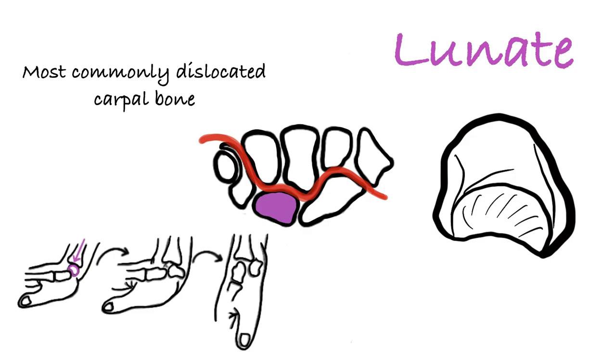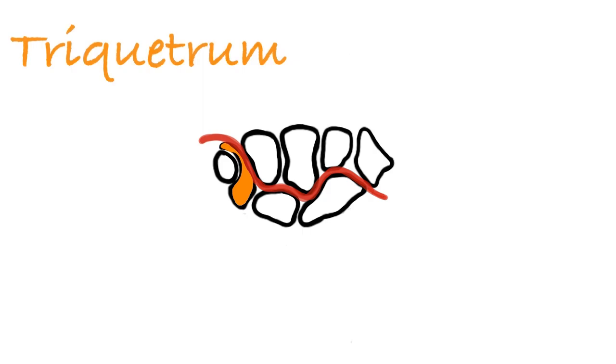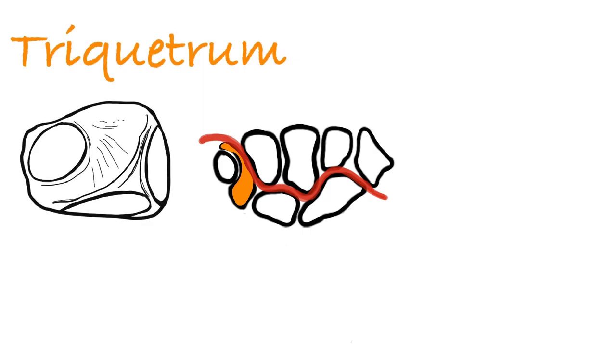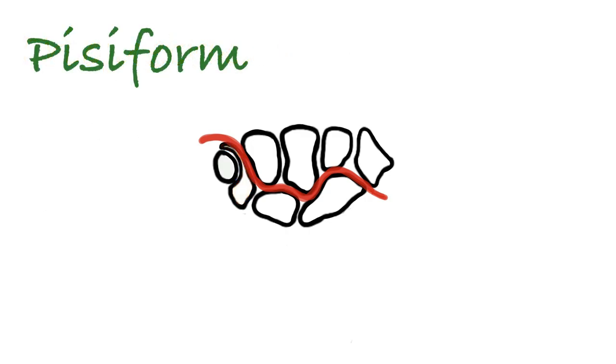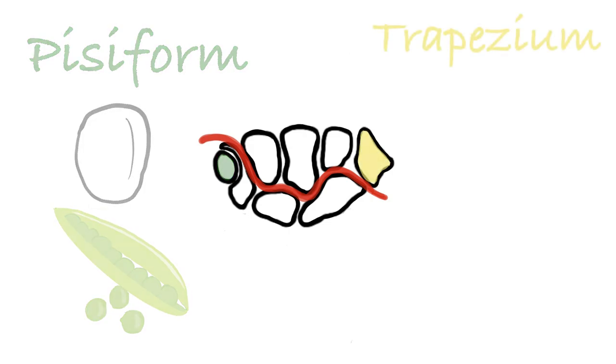Triquetrum is derived from triquetrus in Latin. Tri means three, quetro means corner, so this bone is three-corner shape. It is actually in pyramidal shape and named as triquetrum. Pisiform is pea-shaped bone that lies on the palmar side of triquetrum. Pisum means pea in Latin. Because of bone shape like a pea, named as pisiform. It is the smallest carpal bone among all carpals.